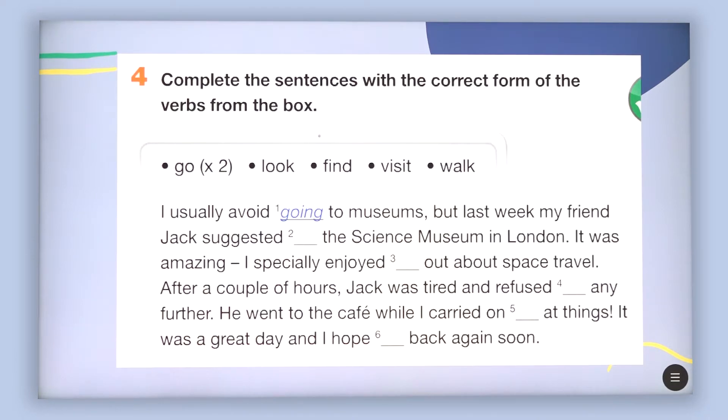Now you are going to continue with another exercise which is complete the sentences with the correct form of the verbs from the box. So here you are going to have the usage of the verb go twice and then you are going to continue with look, find, visit and walk.